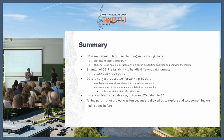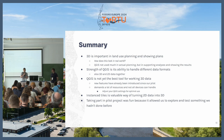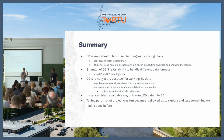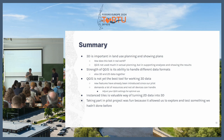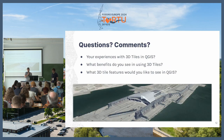Here's a short summary: 3D is important in land use planning and for showing plans. QGIS is great when you can combine 2D and 3D data together and work with different data formats — perhaps not the best tool for 3D yet, but many new features are coming and we'll continue watching this space. Instanced tiles are a valuable way of turning 2D data into 3D.